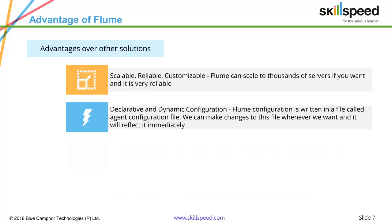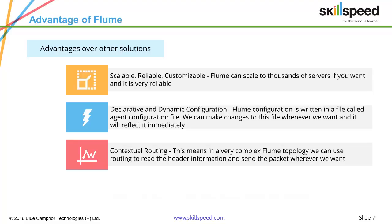Flume is also reliable and customizable. If you come up with a solution where built-in support is not available, you can always customize Flume to your own requirements. Flume also supports declarative and dynamic configuration. Flume works on the concept of something called an agent — an agent is simply a JVM which has Flume in it. The agent can be declared using a simple text file, meaning you can edit a text file representing a Flume agent, change your configuration as needed, and Flume will behave accordingly.